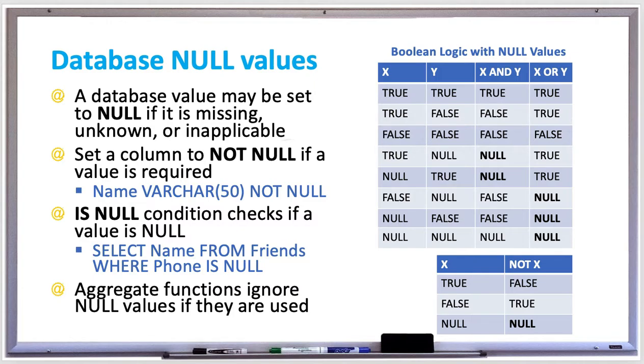And the only time x OR y becomes false is when both x and y are false. But notice that with nulls, if either x or y is null using AND, then x AND y becomes null.